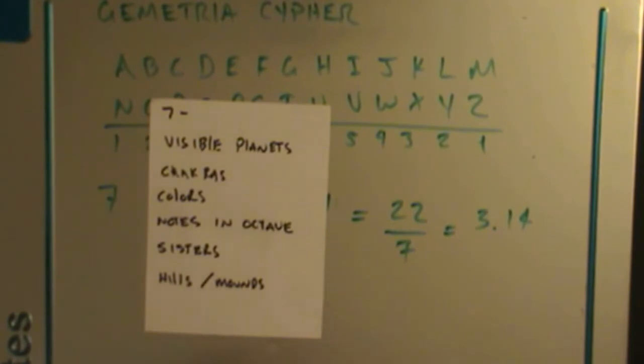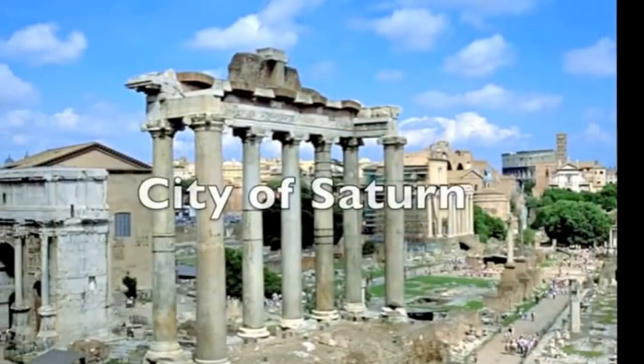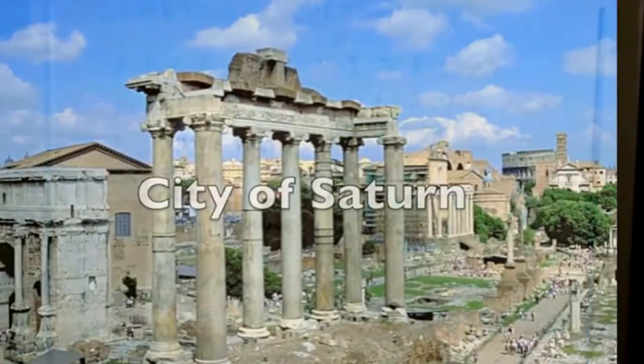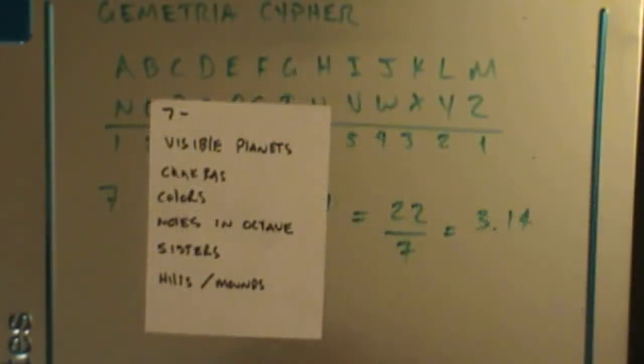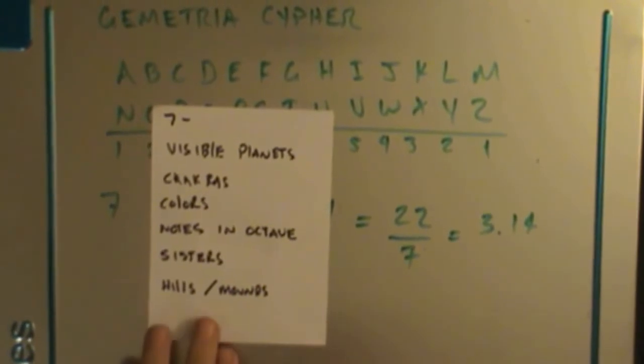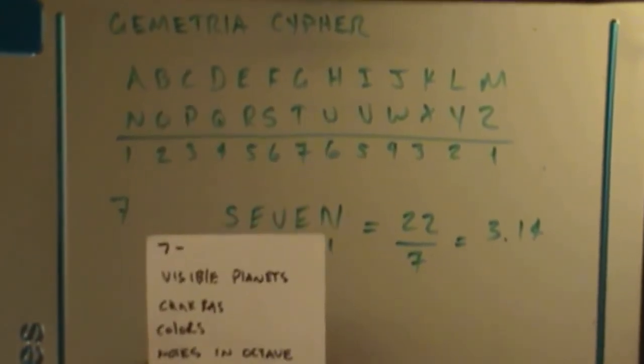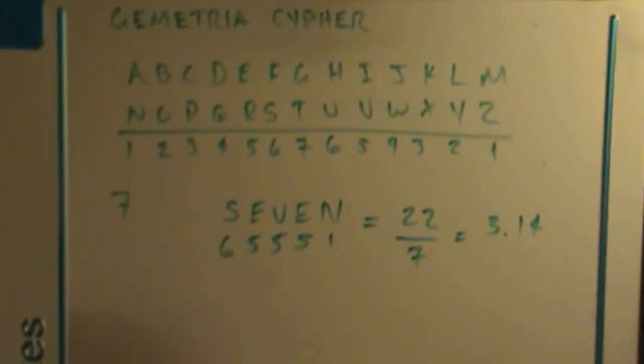Famously heard of the Seven Sisters, which refers to all kinds of constellations, primarily the Pleiades. And then there's also many sacred cities around the world that have built their cities on seven hills or seven mounts, primarily Rome. And Rome used to be called Saturnia before it was called Rome because they basically worshipped Saturn, again, referring to the planets. So seven is a significant number, and seven encodes pi.